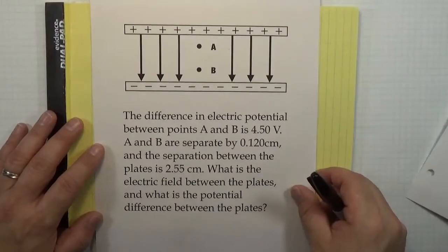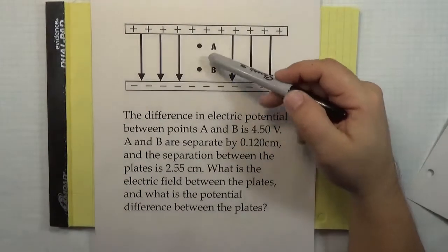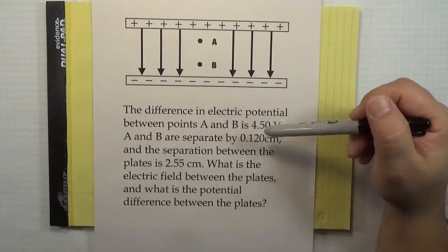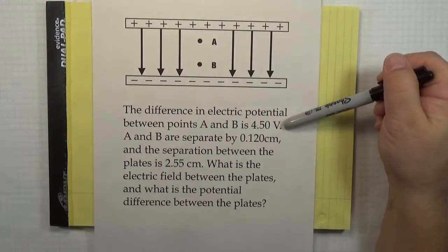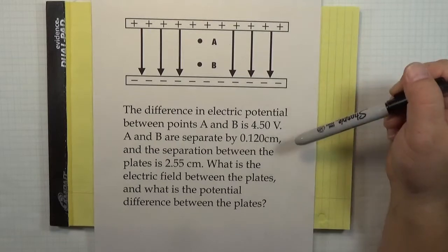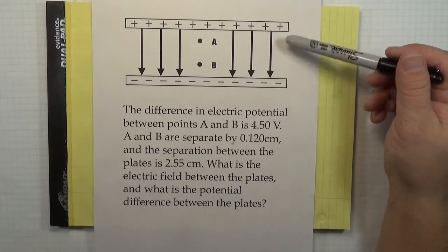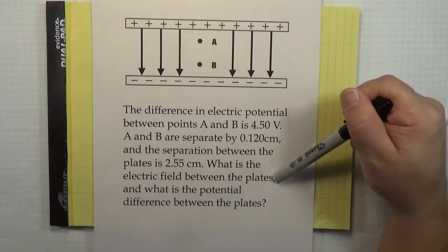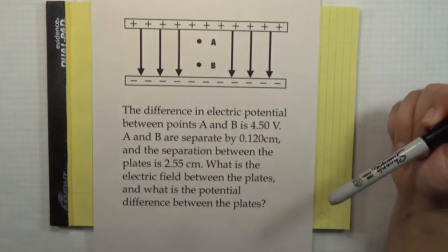Here's a parallel plate configuration with a uniform electric field between it, and I know some information about these two points A and B. The problem says the difference in electric potential between points A and B is 4.5 volts, and A and B are separated by 0.120 centimeters. If the entire separation between the plates is 2.55 centimeters, what is the electric field between the plates, and what is the entire potential difference moving from one plate to the other?